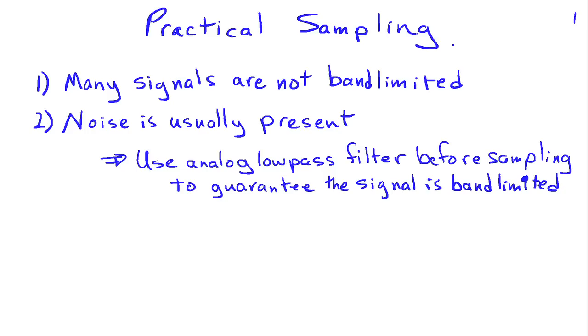That filter has to be an analog filter because we haven't sampled the signal yet. So we get a diagram that looks something like this. We have our original signal, X of T, and then we're going to pass that through an anti-aliasing filter which has frequency response HA of omega. We use a subscript A to denote anti-aliasing. That gives us an analog signal, X of T,